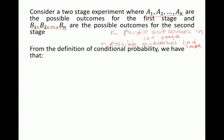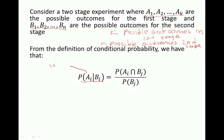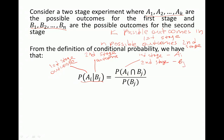From the definition of conditional probability, the conditional probability of the first stage outcome Ai given the second stage outcome Bj equals the probability of Ai and Bj — this can be seen as a possible outcome of the whole experiment where in the first stage we have outcome Ai and in the second stage we have outcome Bj. In the denominator we just have the probability of the second stage outcome Bj.